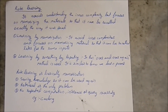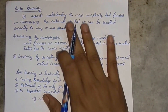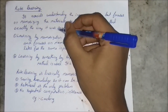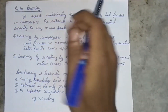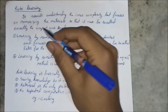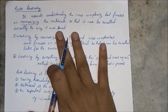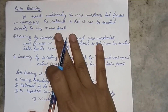Hello guys, welcome to my new video. In this video we'll learn about rote learning. We have five types of learning and the first one is rote learning. This is very simple because rote learning only deals with by-hearting. It avoids understanding the inner complexity but focuses on memorizing.